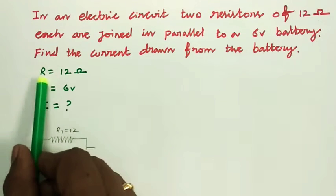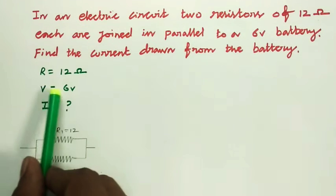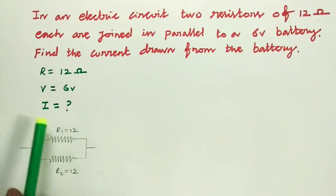Here given resistor 12 Ohm, potential difference 6 volt. Now we find about the current.